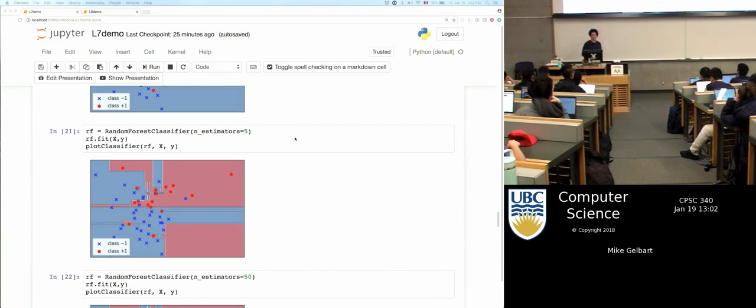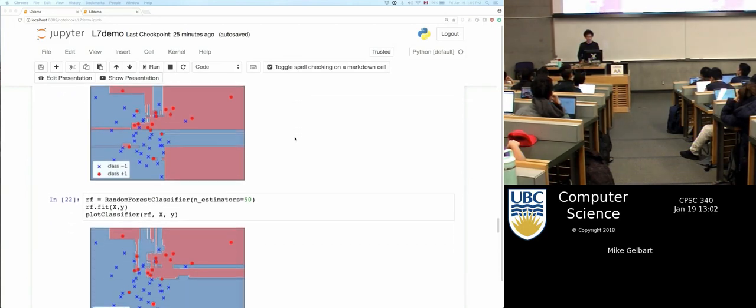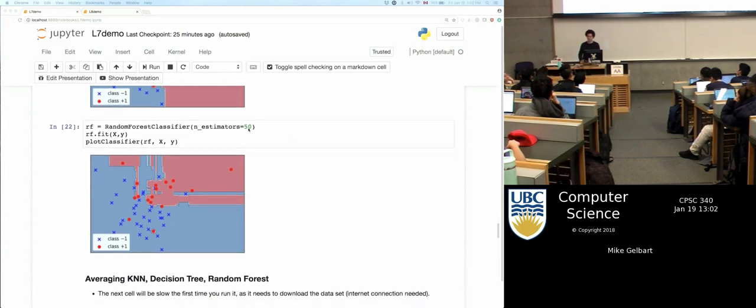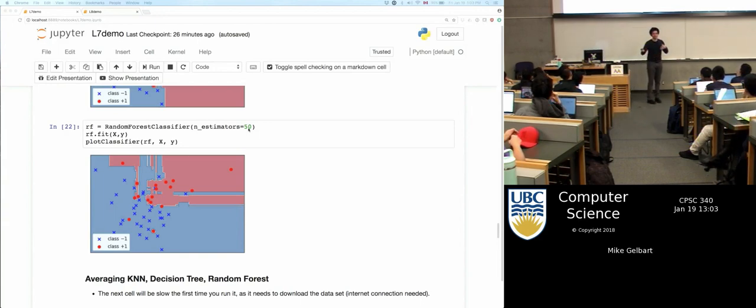This already doesn't really look like what you would expect from a decision tree. I won't put myself on the spot and try to answer whether it would be possible to get this, probably. But it doesn't look like what we expect to see with decision trees. And then as you get to 50 trees, things get even crazier looking. But, supposedly, this is supposed to overfit less, since we're averaging a bunch of trees.